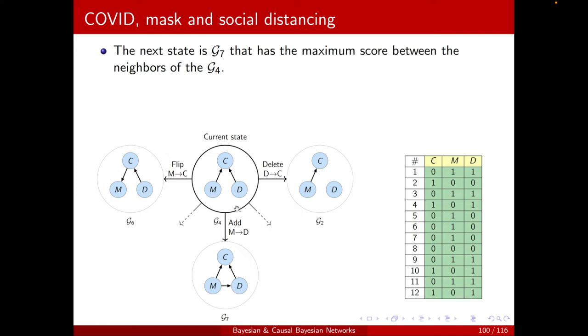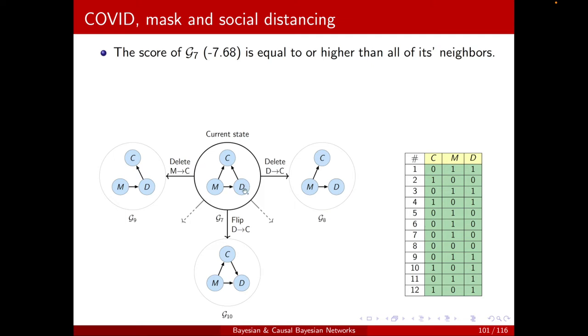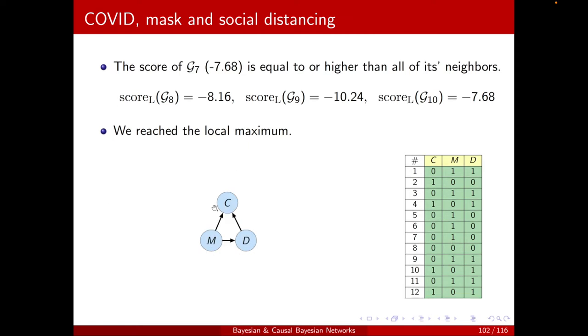Here are the likelihoods, and I can see that G7 has the highest likelihood. So that will be my new current state, and I will move to that state. When I'm at G7, I have my new neighbors. I have to calculate the likelihoods of all of the neighbors. And then I will see that none of them are scoring higher. So the highest one is G10, which is the same as G7. It's not too surprising because they are I-equivalent, and it's a likelihood score. So I have basically reached a local maximum. I cannot move further from here. And actually, in this case, we know that this is a global maximum because a fully connected network has the highest score for a likelihood score. So my final DAG will be this.